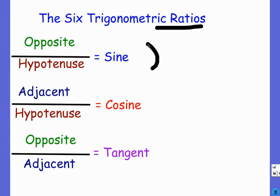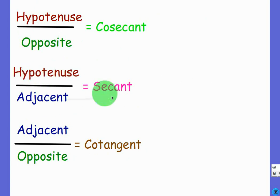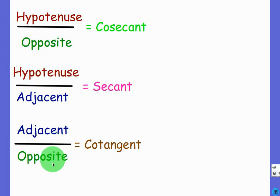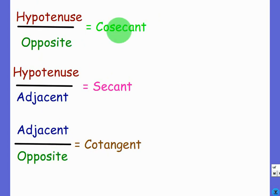However, there are three more trig functions, and we get those by flipping the three fractions. The next trig function is cosecant — when you flip sine, it's hypotenuse over opposite instead of opposite over hypotenuse. The next one is secant, which is hypotenuse over adjacent — that's cosine flipped. These are going to be bigger than one because the hypotenuse is always bigger than the opposite or adjacent side. The last one is cotangent, which is adjacent over opposite — just the flipped version of tangent.